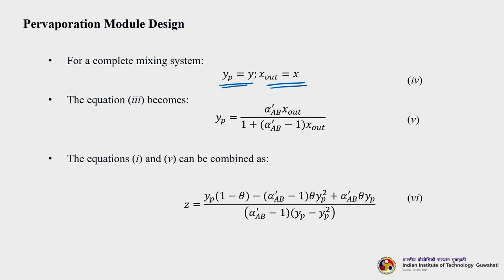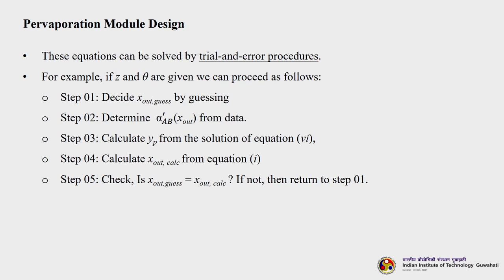Substituting into the equations gives y_p = (alpha_AB prime · x_out) / (1 + (alpha_AB prime - 1)·x_out). Equations 1 and 5 can be combined to find z. These equations can be solved by trial and error procedures - you can write a small code in any language to solve it. For example, if z and theta are given: step one, guess x_out; step two, determine alpha_AB prime and x_out from data; step three, calculate y_p; step four, calculate x_out from equation 1; and check if x_out guess equals x_out calculated. If not, return to step one.